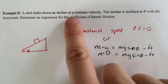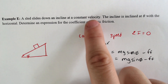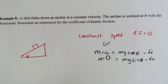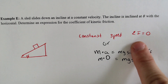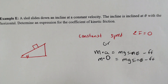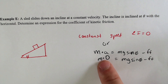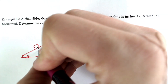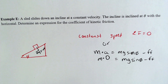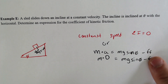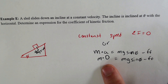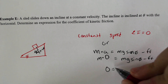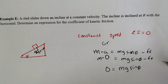For this next example, a sled is sliding down an incline at a constant velocity, and the incline is at angle theta with the horizontal. Determine the expression for the coefficient of friction. If it has a constant speed, that means the sum of all forces equals zero — it's in balance. Using the formula from before: mass times acceleration equals mg sine theta minus the force of friction. If it's at constant velocity, acceleration is zero, so m times zero goes away, and you have 0 equals mg sine theta minus the force of friction.